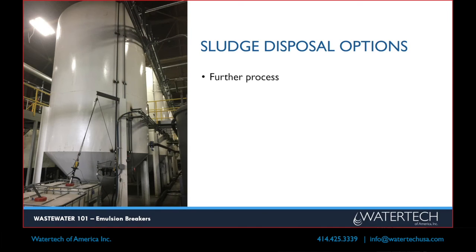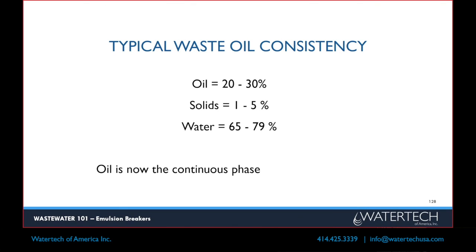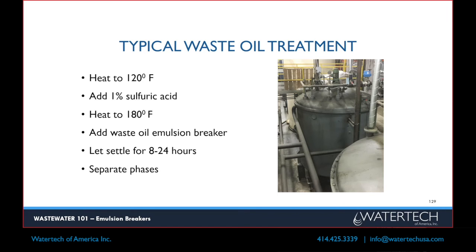So what can you do with that sludge — and really we're talking about oil here? Well, you can further process it, or you can solidify it and haul it off to a landfill. You could also burn it. Typically you want to have that oil in the 20–30% range, keeping it with low solids. In this depiction we're talking about oil in the continuous phase, which means it's basically oil that you could sell. So if you're going to take it to the next level, you heat it up, add sulfuric acid, and possibly an oil emulsion breaker, depending on which kind of waste oil it is. Sometimes it takes a day or two for it to separate.